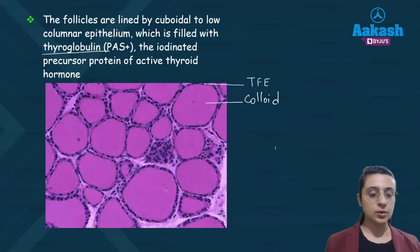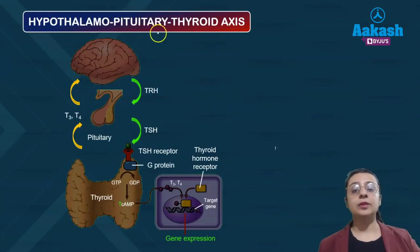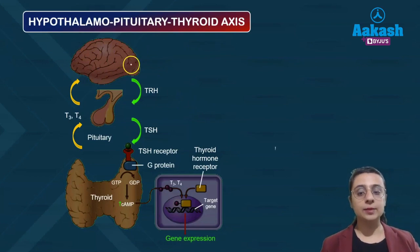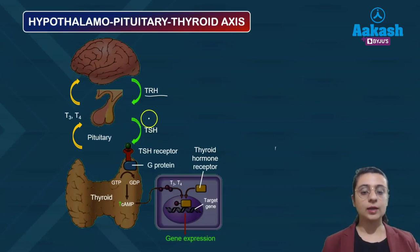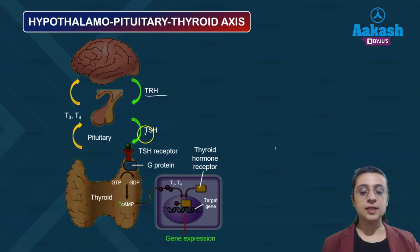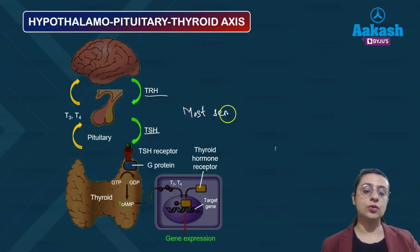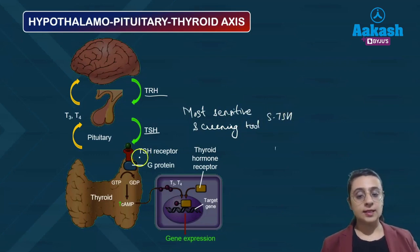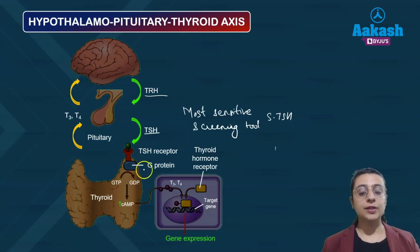Next, we will see the hypothalamus-pituitary-thyroid axis. The hypothalamus releases thyroid-releasing hormone, which activates the pituitary to release TSH. From a pathology point of view, serum TSH levels are the most sensitive screening tool for diagnosis of thyroid conditions.